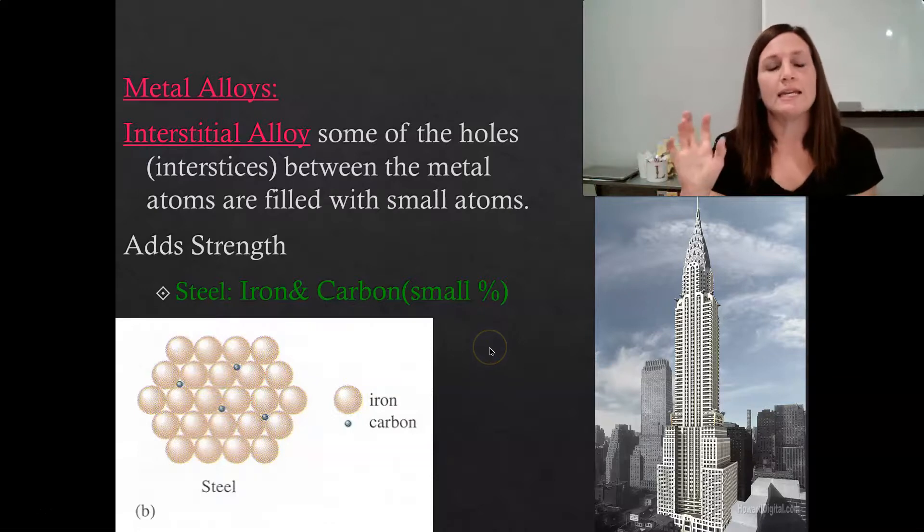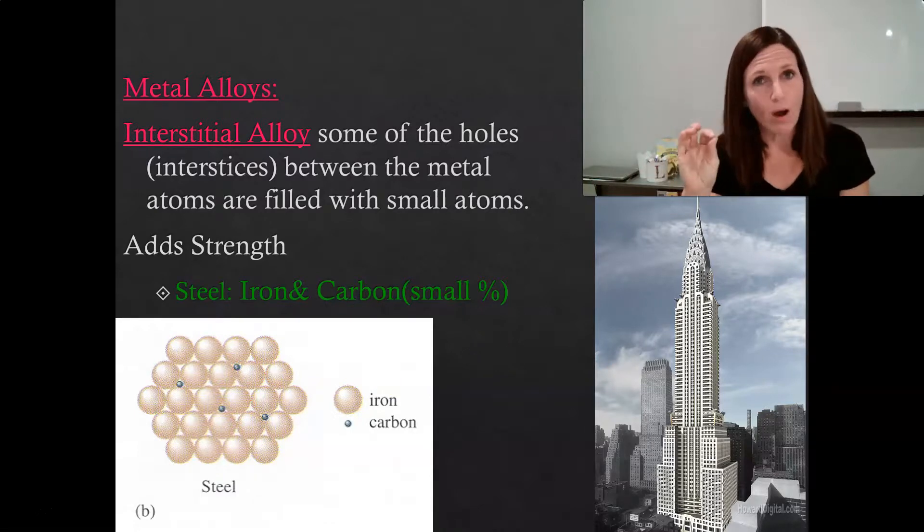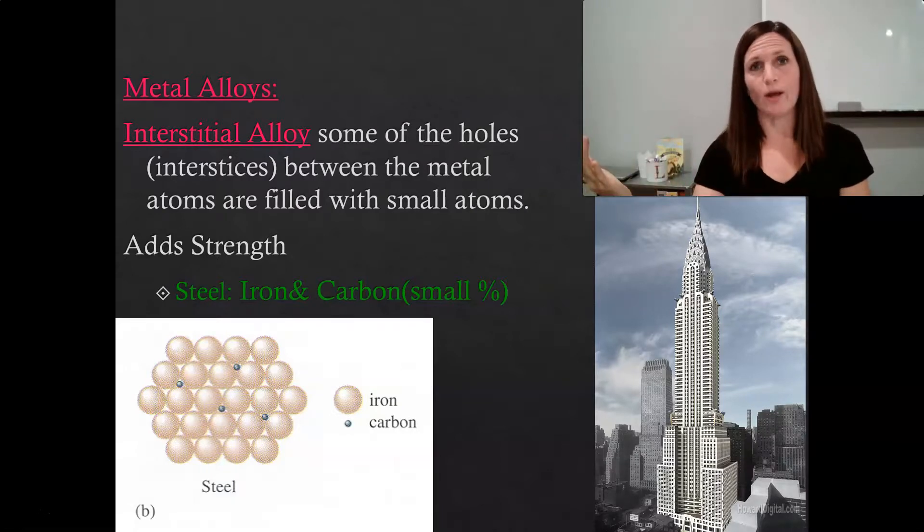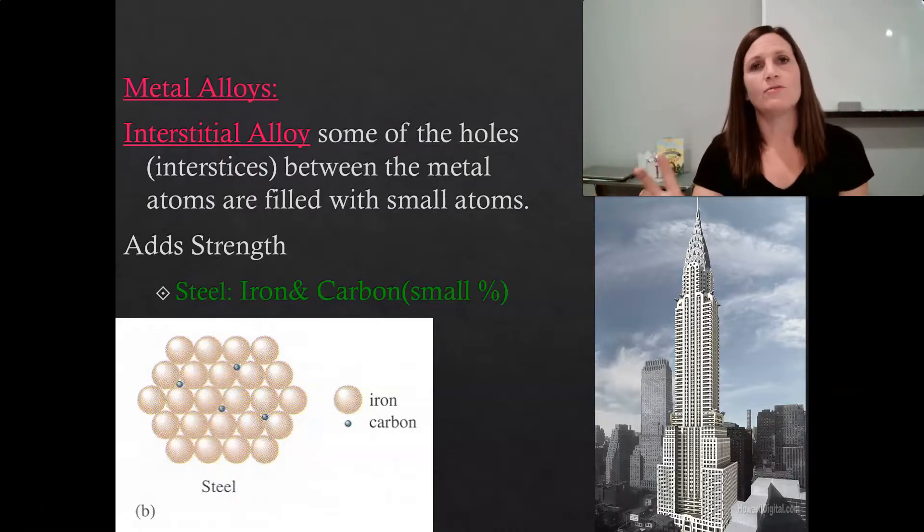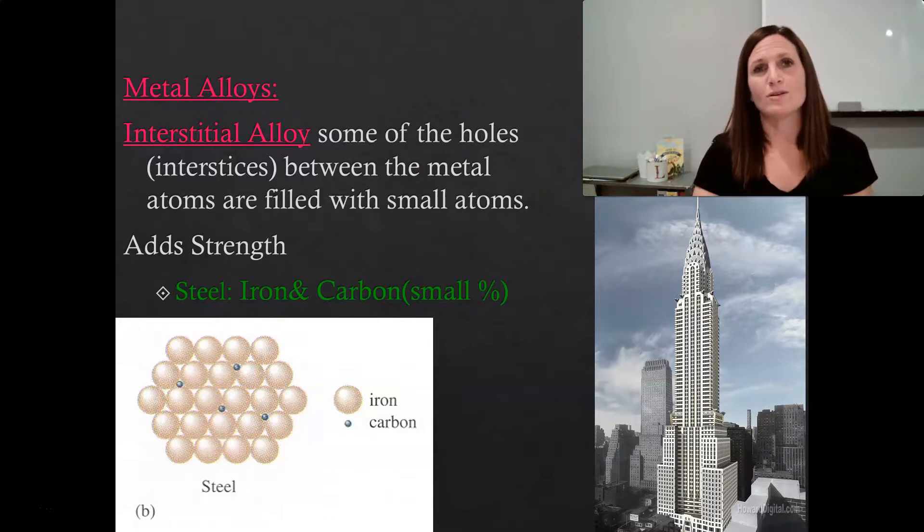So in an interstitial alloy, we are adding small molecules to increase strength. Or with the substitutional alloy, we're adding similar sized atoms in order to decrease cost. So these are two different ways that we can use mixtures. Remember, these are not bonds. They're mixtures of different metals in order to help with our society.